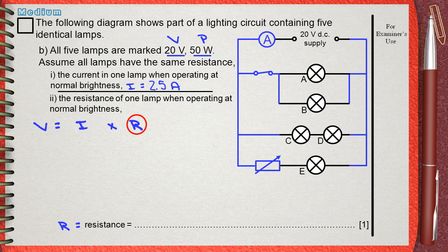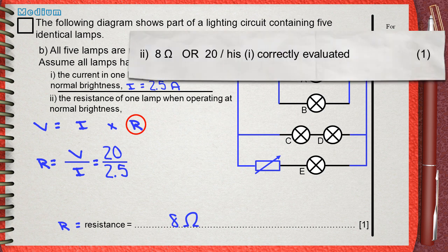To find the resistance, we have to make another modification. R equals V over I. This means 20 divided by 2.5. This gives 8 Ohms. The mark scheme awards 1 mark for 8 Ohms.